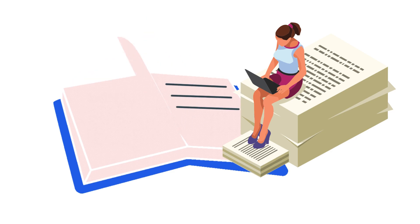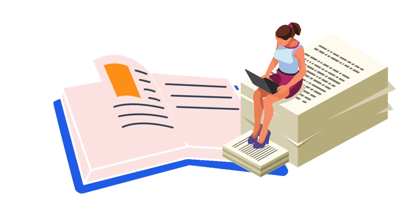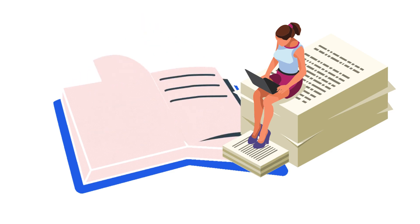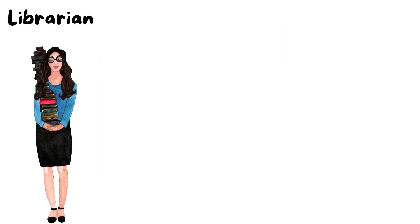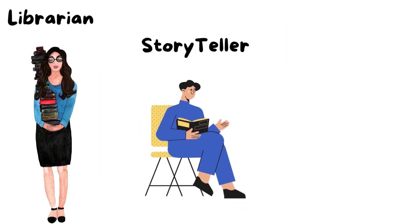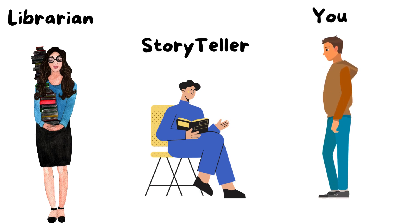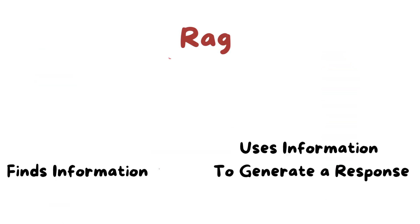Then the storyteller reads those books and crafts a response, like a generator, using the information found to give you an answer. The librarian finds the right books, and the storyteller uses them to tell you what you want to know. This teamwork between finding information and using it to generate a response is what RAG does, making sure you get the best answer possible.